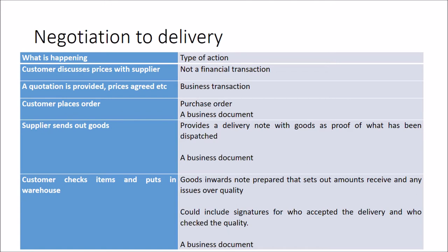Starting from negotiation to delivery: first, a customer discusses prices with the supplier — this is not a financial transaction, so nothing is recorded in the accounting system. After this discussion, a formal quotation may be provided, or a catalogue setting out prices and product codes. This becomes a business transaction when we agree on prices and quantities. The customer then places a purchase order, taking information from the quotation or catalogue and inserting product codes and quantities. This is a business document distributed by the buyer.